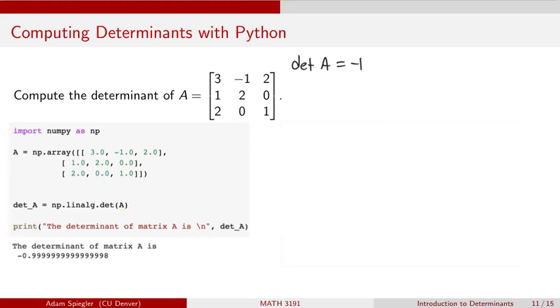So writing out np.linalg.det and inputting this array, this matrix A that we just defined, this gives me an output of minus 0.9999999999999998. So we see that this is pretty close to minus one. But there is some error in this calculation. It's really far out there.